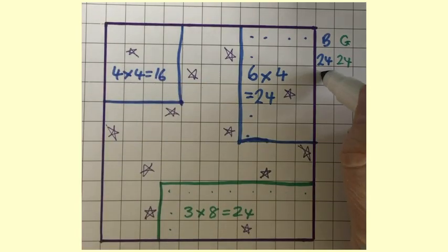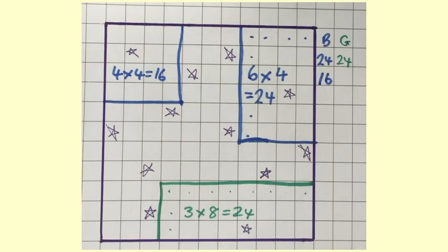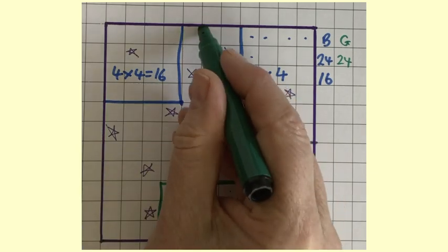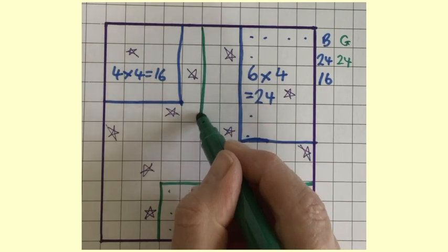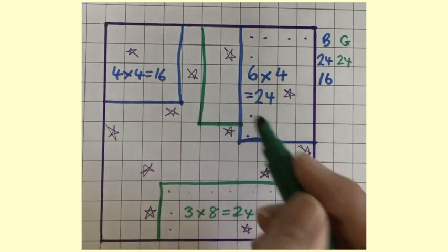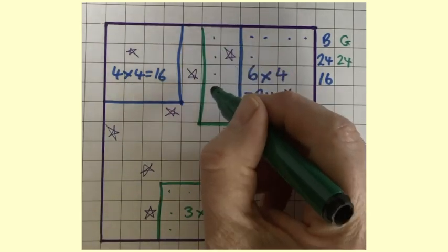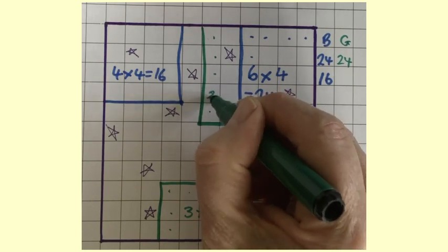And now green, there's nothing really obvious for green to do because you can't choose the ones in the middle because you've got to only draw two lines. So green decides to do a reasonably long, thin rectangle, which is five rows of two. So that comes to 10.